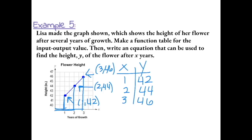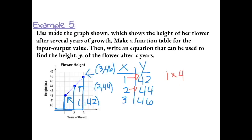Now we look for a pattern between our input and output values. To get from input 1 to output 42, we could try adding 41. But 2 plus 41 gives us 43, not 44, so that rule doesn't work. Next, we could try multiplying: 1 times 42 gives 42, but 2 times 42 gives us 84, not 44. So that rule also doesn't work.